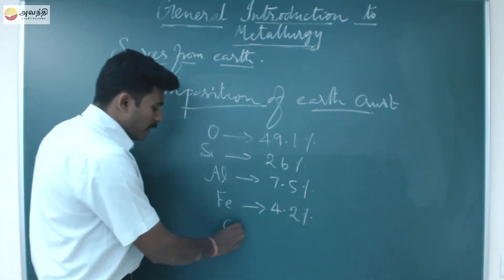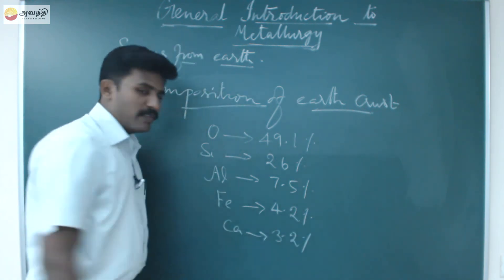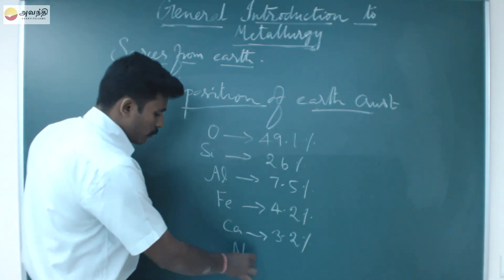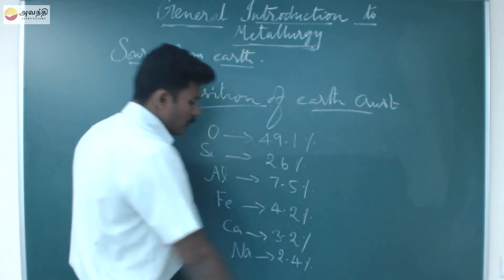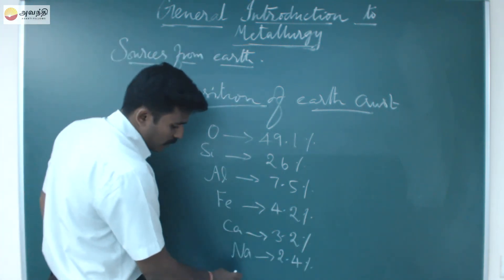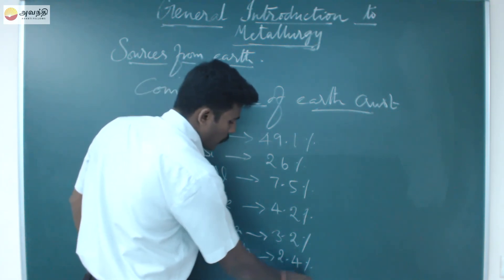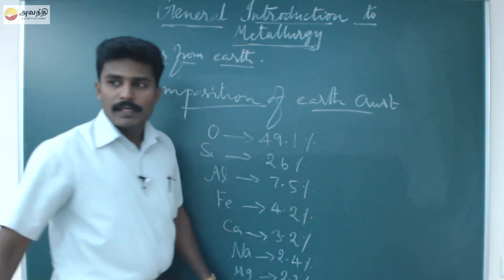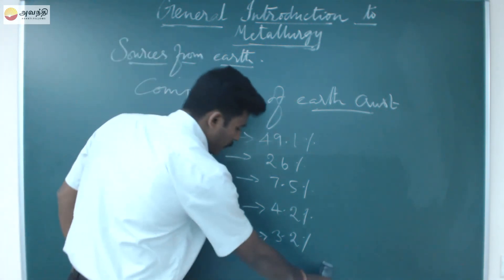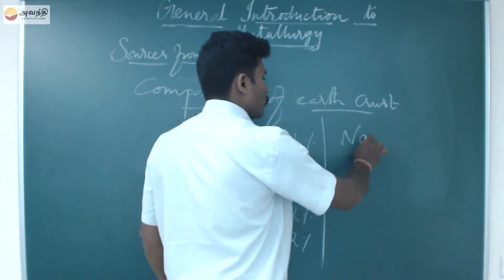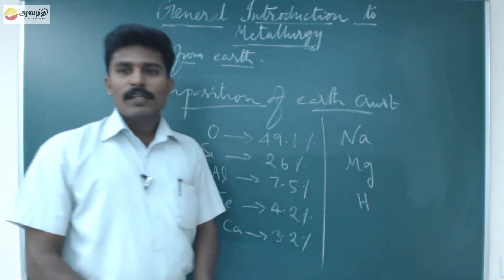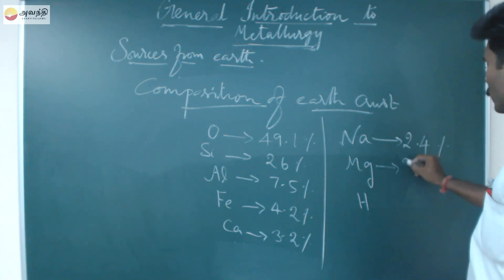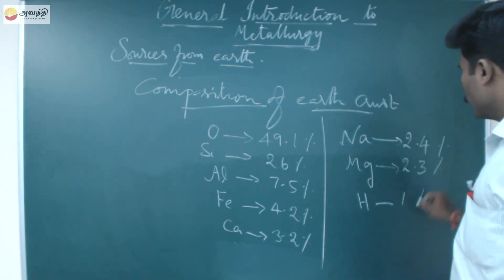After iron, calcium is also present in our earth's crust at 3.2%. Then sodium is 2.4%, magnesium is 2.3%, and very rarely, hydrogen is present at about 1%. So the order is: oxygen 49.1%, silicon 26%, aluminum 7.5%, iron 4.2%, calcium 3.2%, sodium 2.4%, magnesium 2.3%, and hydrogen 1%.